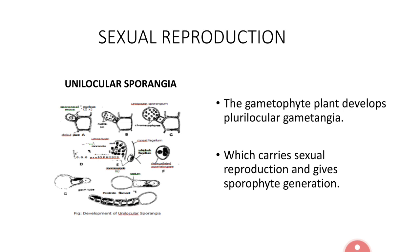The spores from unilocular sporangia develop into the Ectocarpus gametophyte plant. This gametophyte plant develops only one type of gametangia — plurilocular gametangia. The difference between plurilocular sporangia and plurilocular gametangia is that plurilocular sporangia are asexual structures developed on the sporophyte stage, whereas plurilocular gametangia are sexual structures developed on the gametophyte stage. Plurilocular gametangia also have many locules, each with a single nucleus and cytoplasm, together forming a gamete.